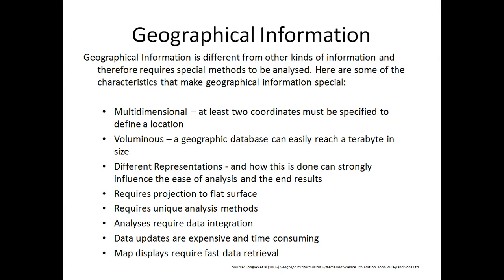Geographic information is different from other kinds of information and therefore requires special methods to be analyzed. Characteristics that make it special: first, it is multi-dimensional — at least two coordinates must be specified to define a location, such as XY Cartesian or latitude/longitude. It is voluminous — geographic databases can easily reach a terabyte in size. Different representations can strongly influence ease of analysis. It requires projection to a flat surface, unique analysis methods, and data integration. Data updates are expensive and time-consuming, and map displays require fast data retrieval.